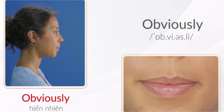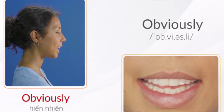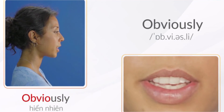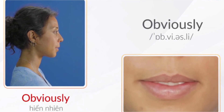Obviously. Các bạn chú ý từ này có 4 âm tiết, trọng âm rơi vào âm tiết đầu tiên. Từ này bắt đầu bằng âm O ngắn, các bạn chú ý mở miệng và bật ra âm O rất khoát và rõ ràng nhé. Lưu ý cuối cùng đó là từ này có chữ âm S ở phần giữa từ, các bạn phát âm rõ ràng và đầy đủ nhé.